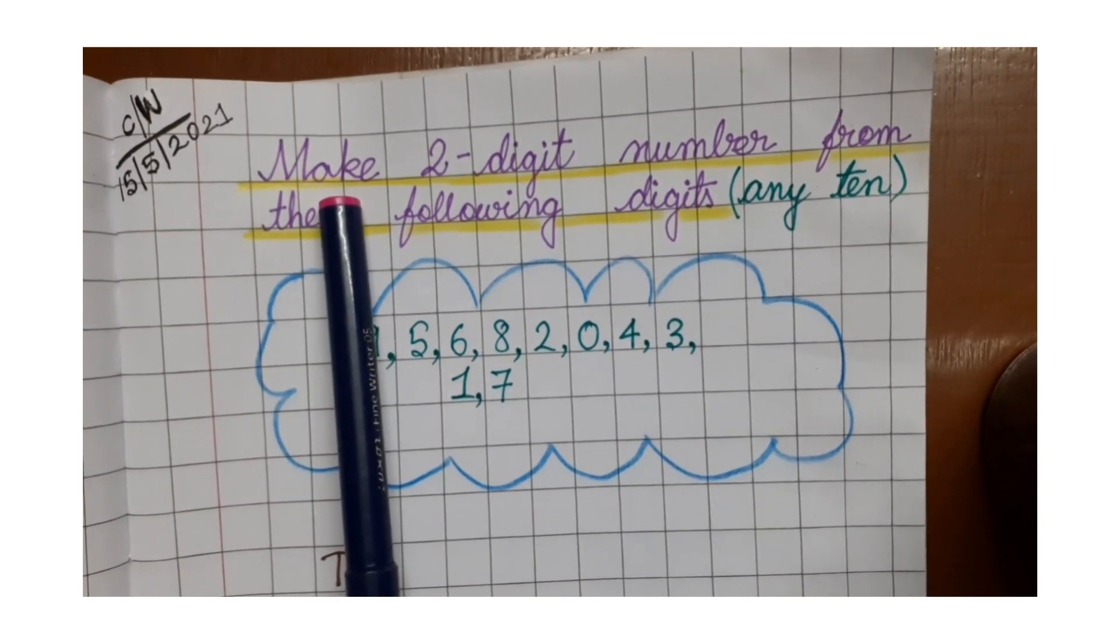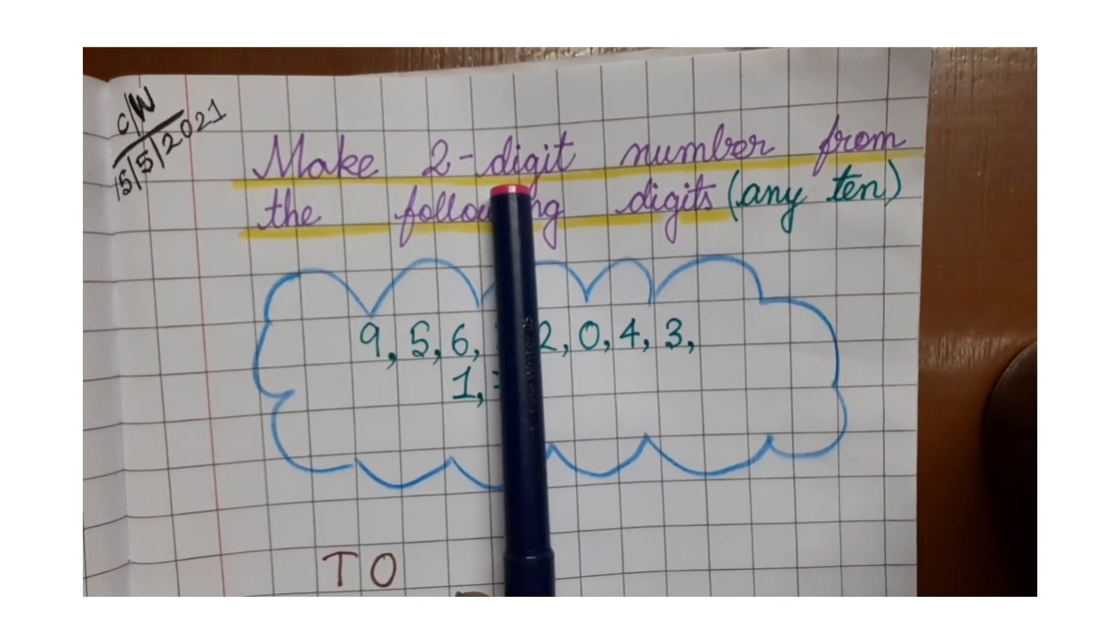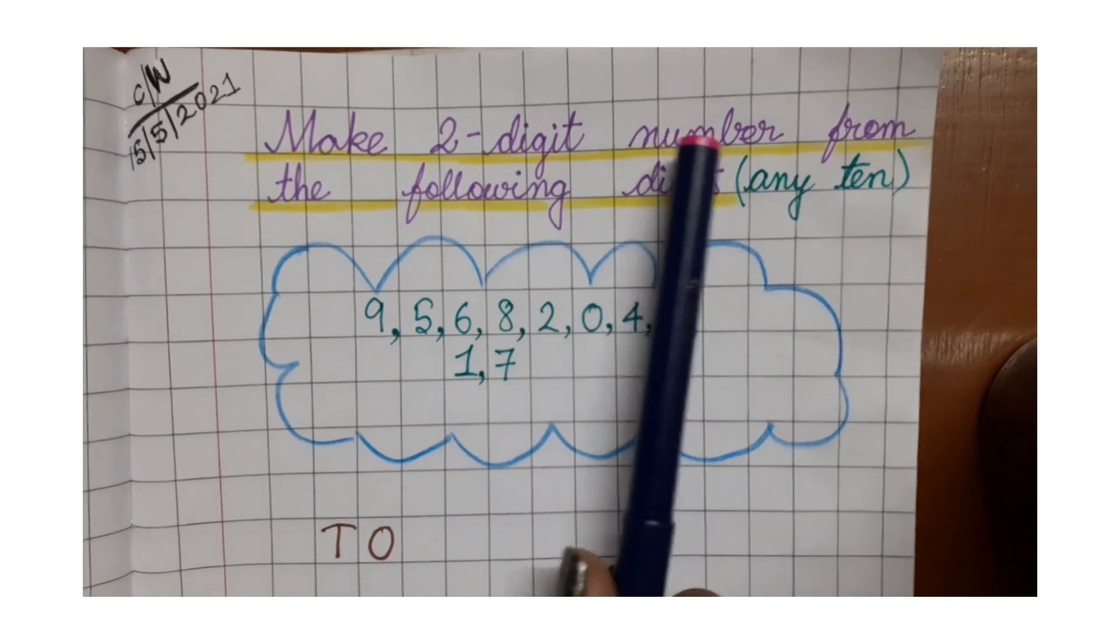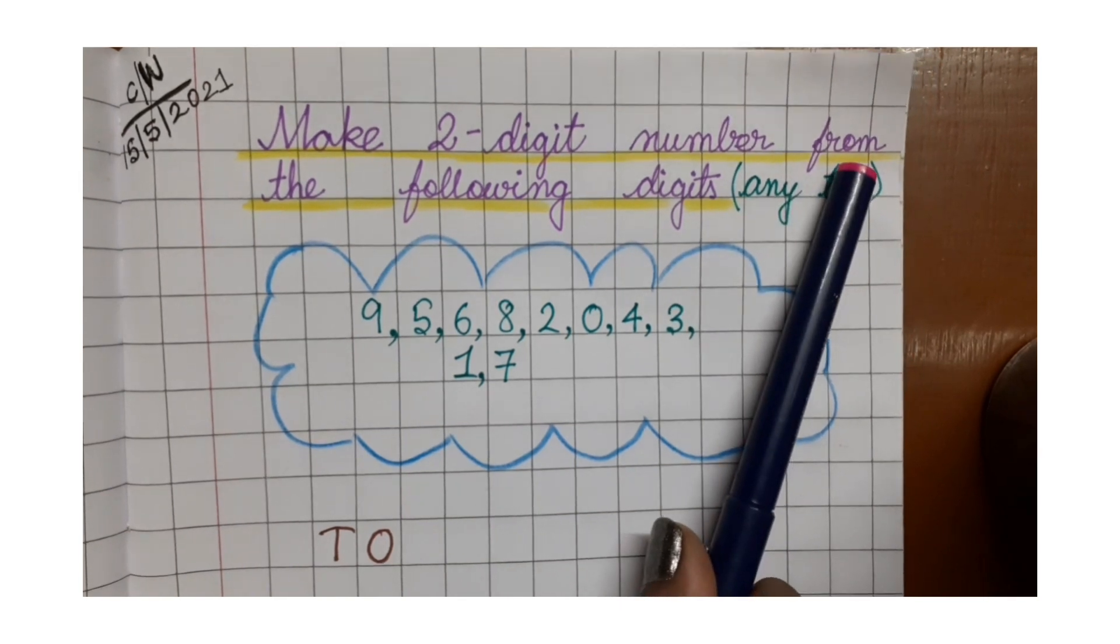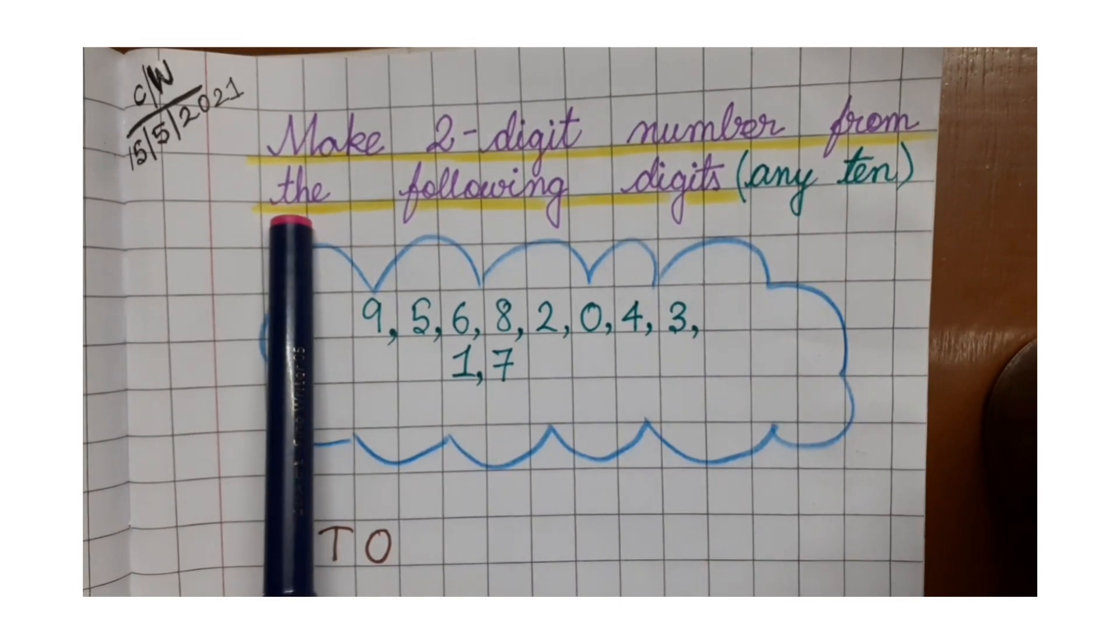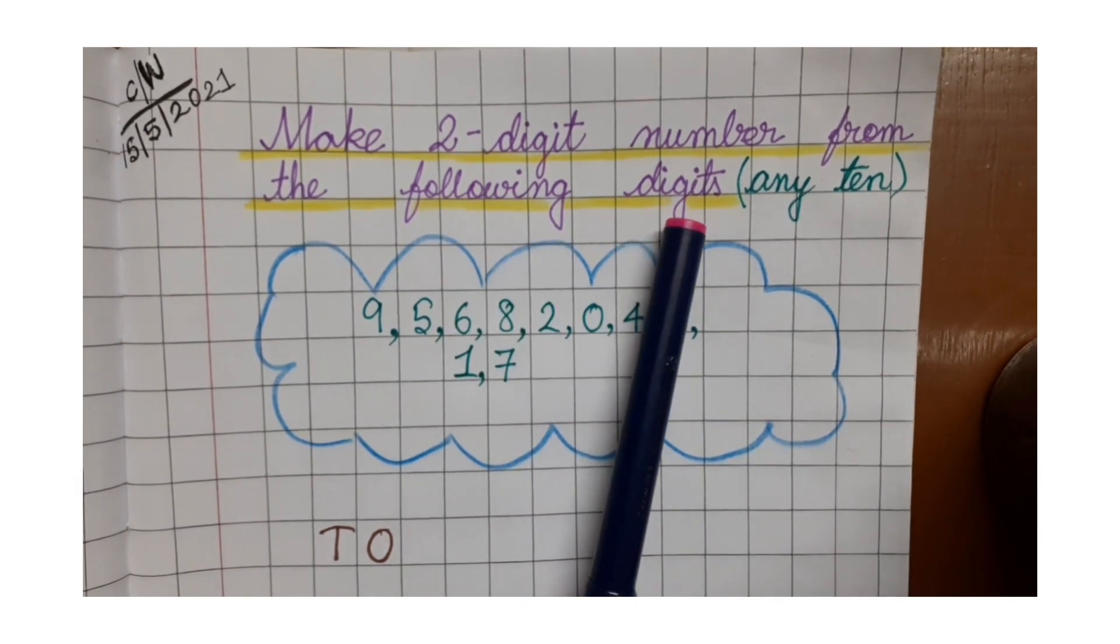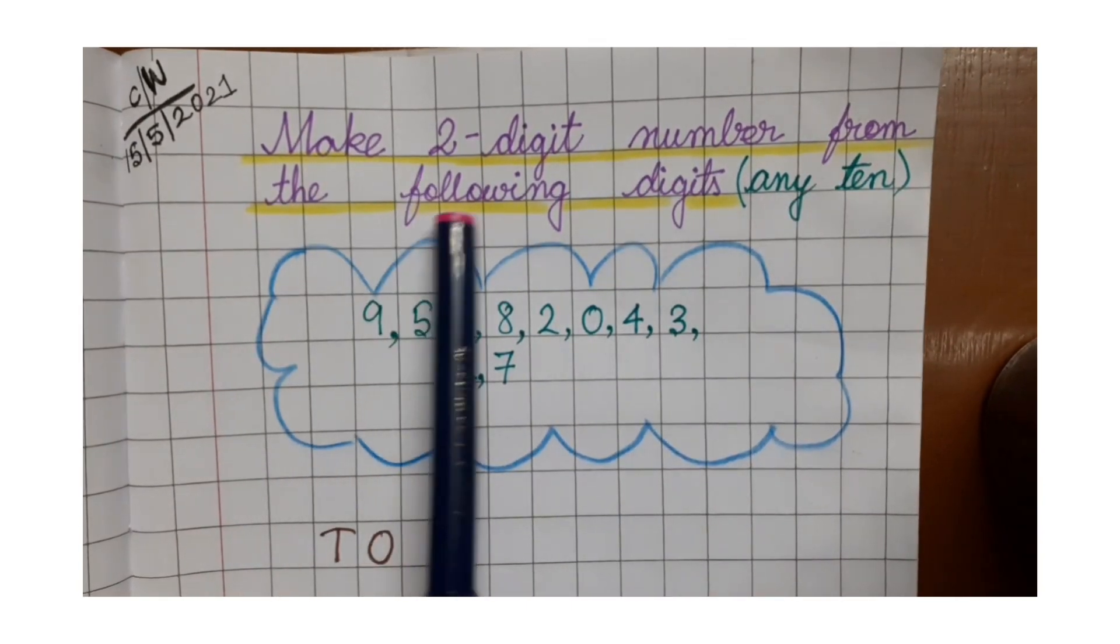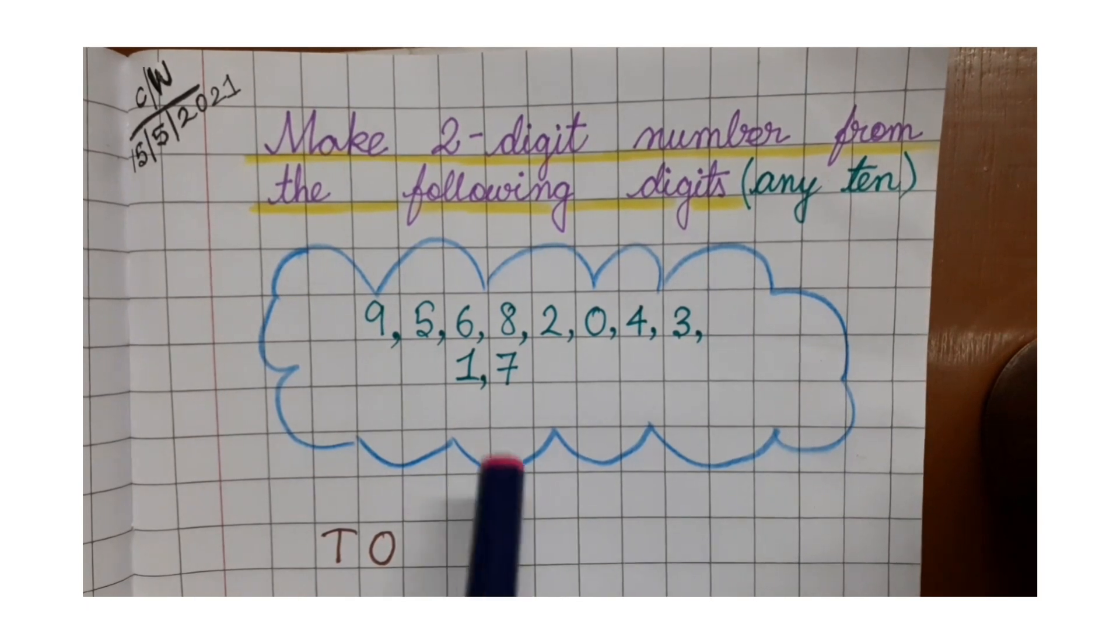Make two digit number from the following digits. Any ten, you can make any ten.